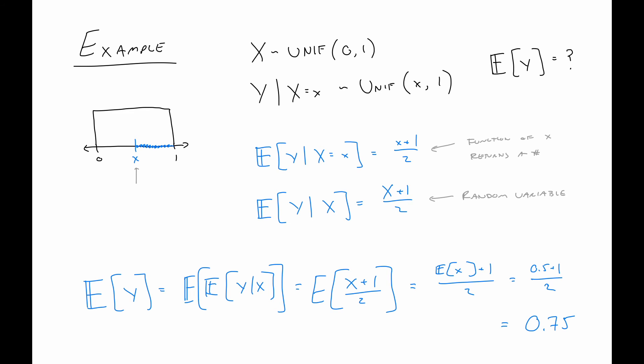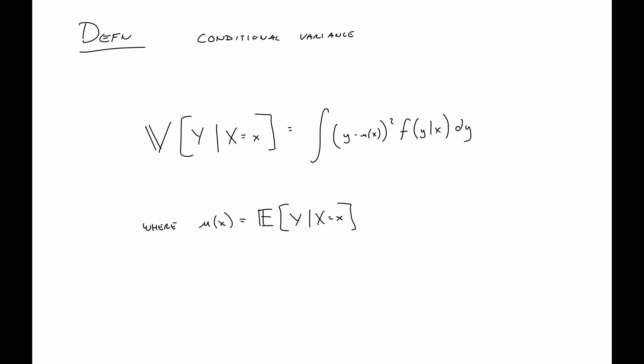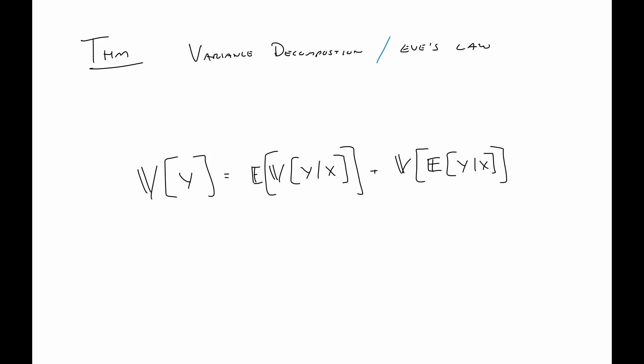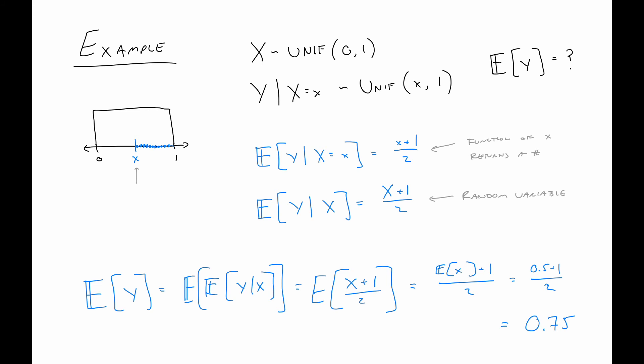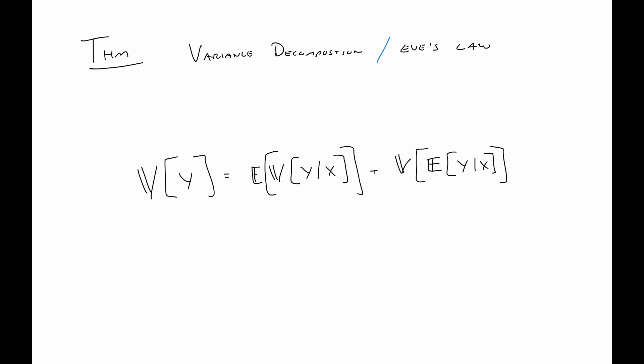Similarly we have the notion of conditional variance, and a theorem called Eve's Law — the variance decomposition — which pairs with Adam's Law. It breaks down Var(Y) into expected conditional variances and variances of conditional expectations. This can be applied to hierarchically defined models to get an unconditional variance. I won't go through a full example here as it would involve tedious calculation.